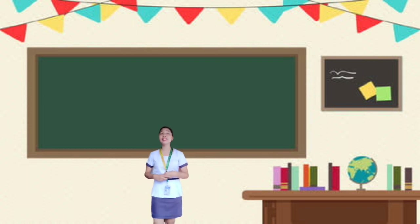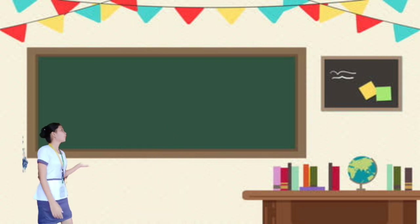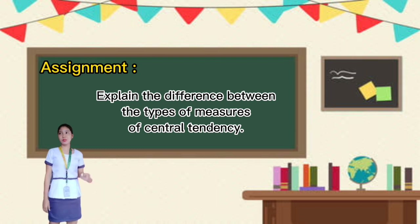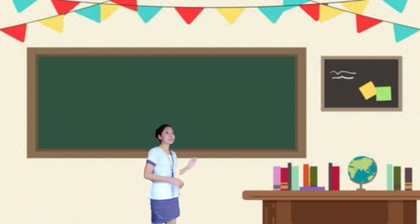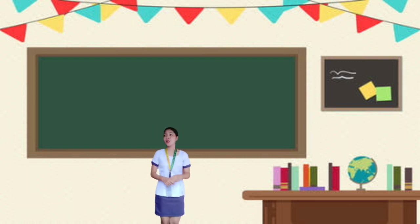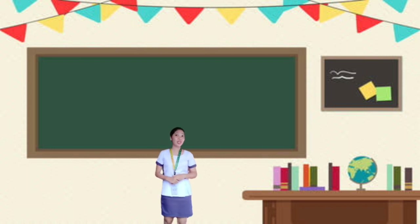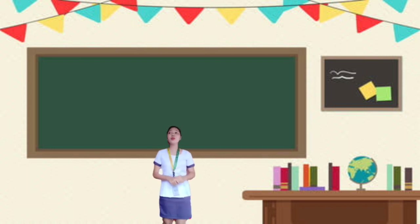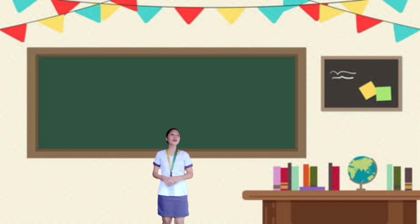Time's up, class. Later you will see your scores for the quiz once I'm done checking. For now, here is your assignment: in your own words, explain the difference between the types of measures of central tendency. I will post this to our Google Classroom and you can attach your answers there — it can be printed or written. Since there are no more questions, I guess that's all for today, class. Thank you and goodbye.